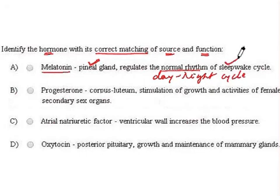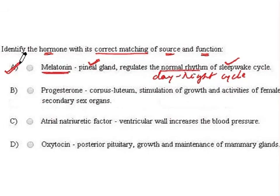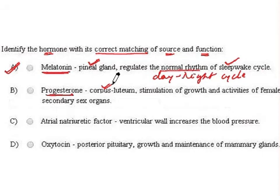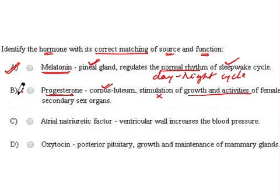So in option A, melatonin's source — the pineal gland — and its function are both correct. In option B, the hormone is progesterone, its source is corpus luteum which is correct, but the function says it stimulates the growth and activities of the female secondary sex organs. This function is actually that of estrogen; progesterone is responsible for maintenance of pregnancy, so this becomes an incorrect match.